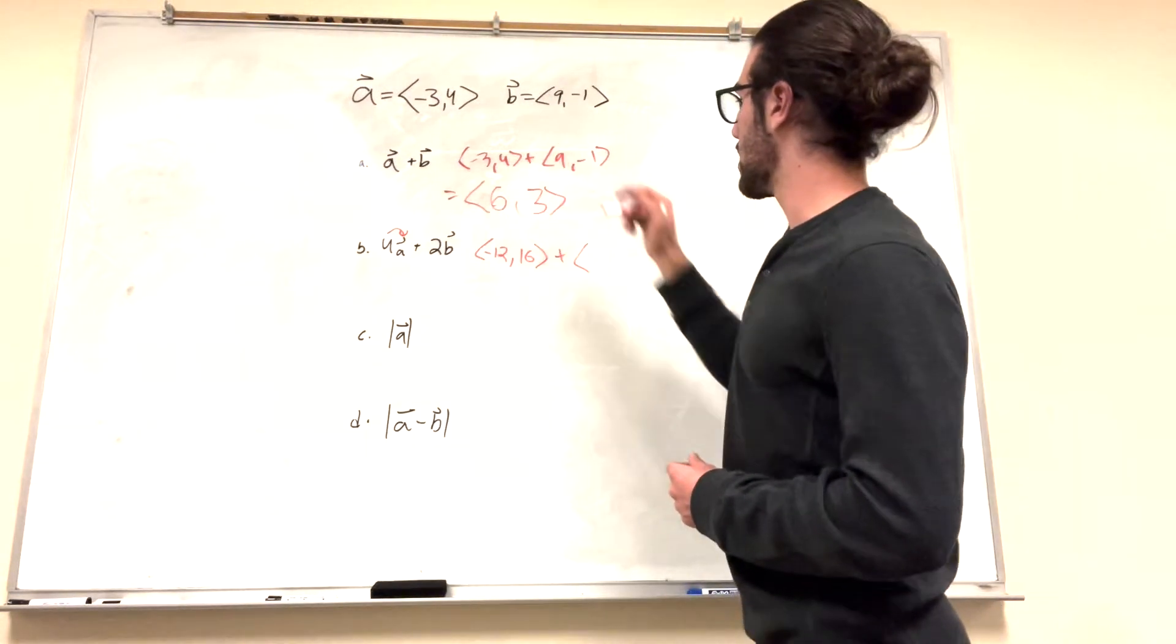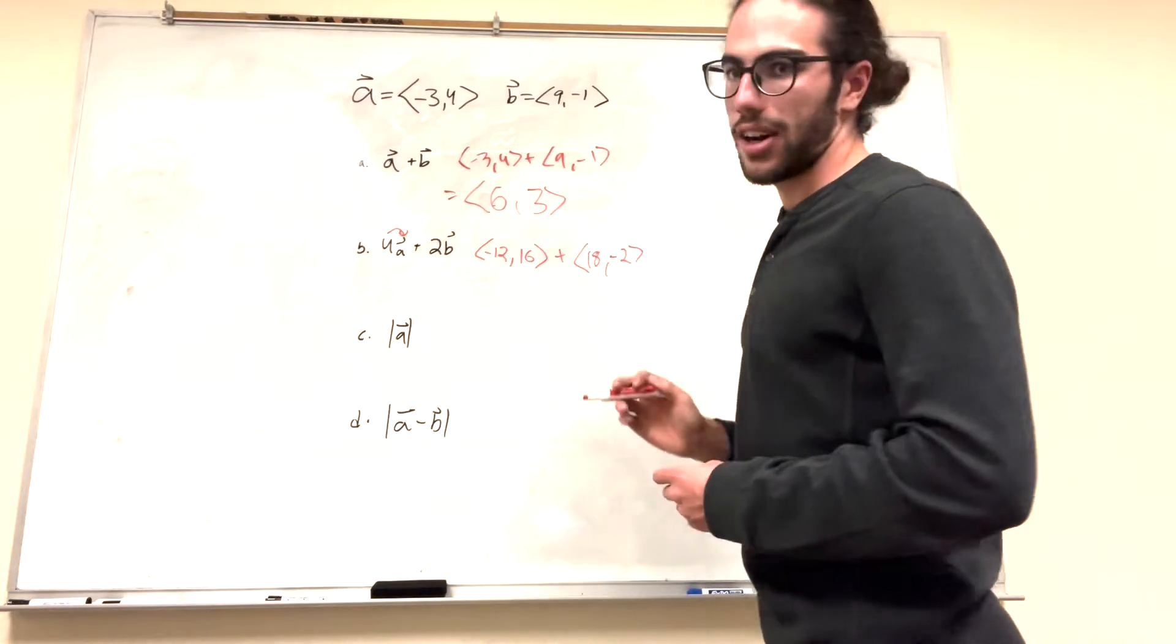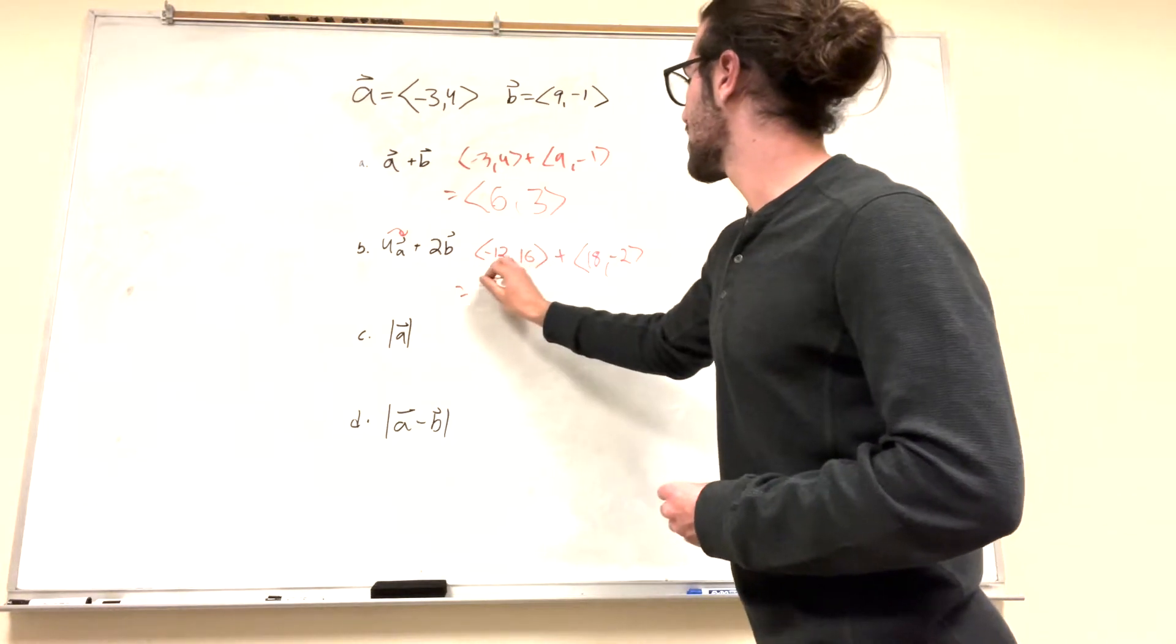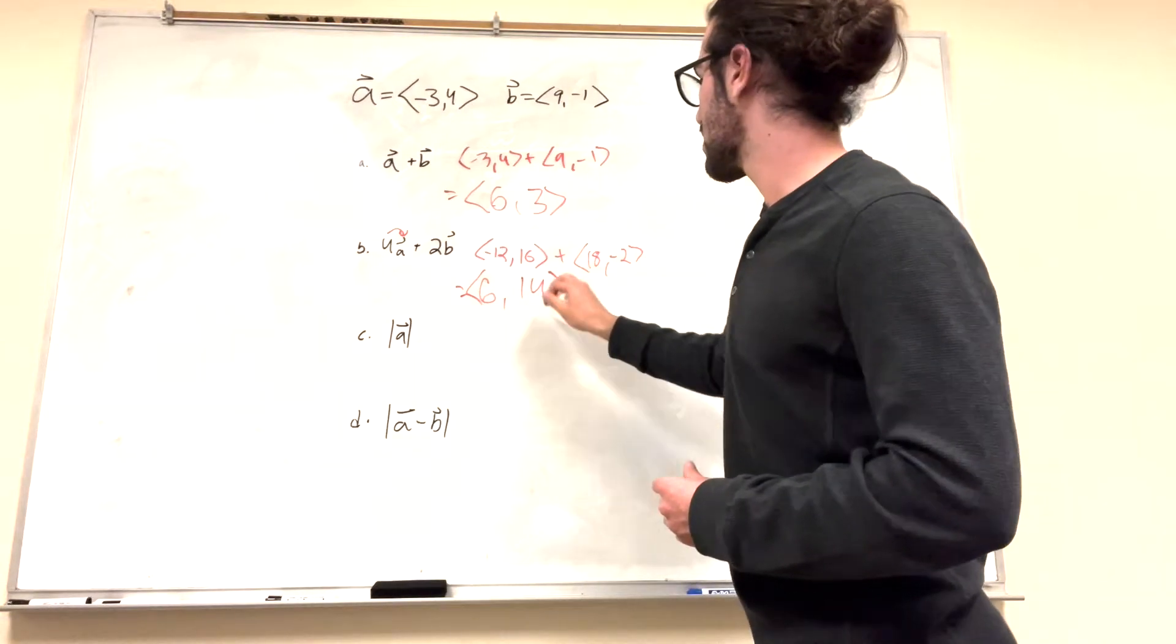Plus 2 times b, so it'll be 18. And then 2 times negative 1, negative 2. All right, and then we do the same thing we did for the first one. So negative 12 plus 18 is 6. And 16 minus 2 is 14. So this is our vector.